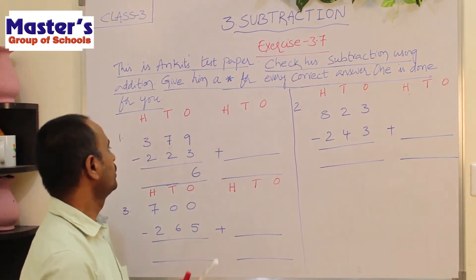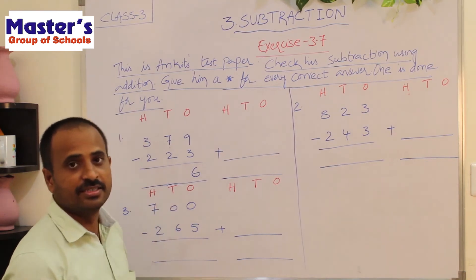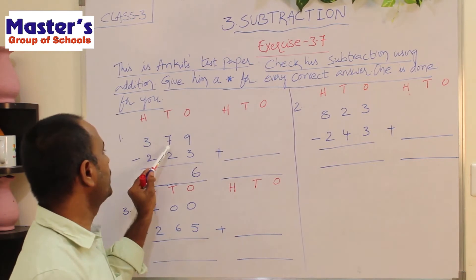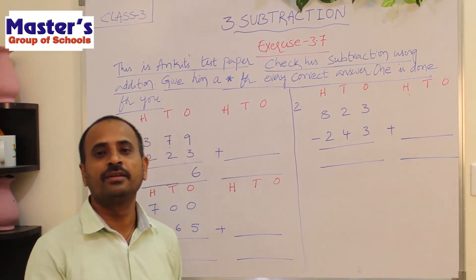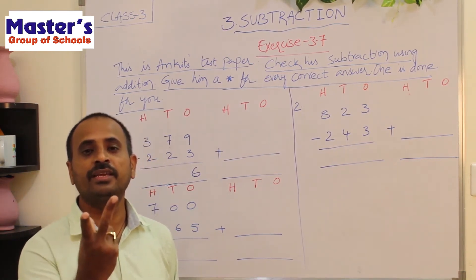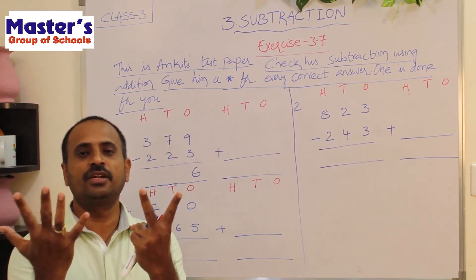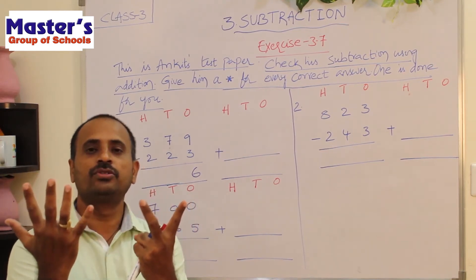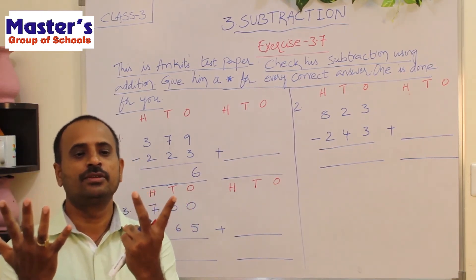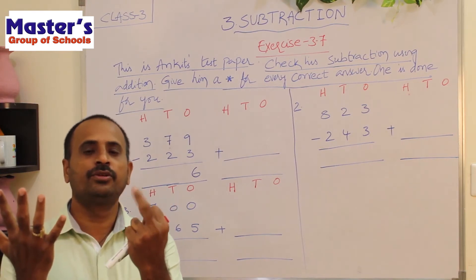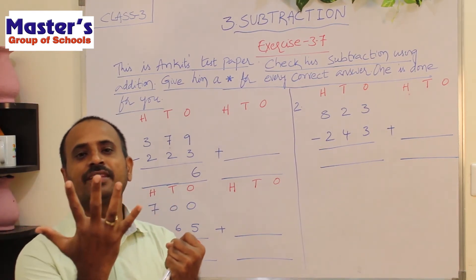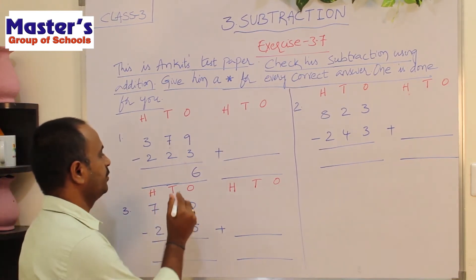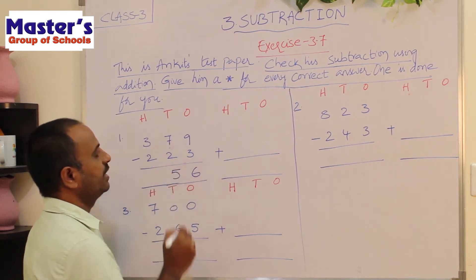Go to tens place: 7 and 2 are present. Open 7 fingers, close 2 fingers: 1, 2. There are 5 fingers remaining. Write 5 under tens place.